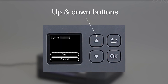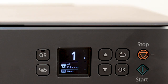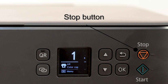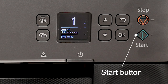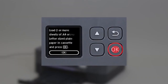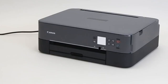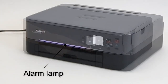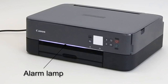Up and down buttons — ginagamit upang mamili ng setting item, pwede din gamitin for entering characters. Back button — pindutin lamang para bumalik ang LCD to the previous screen. Stop button — cancels operation when printing is in progress or kapag pumipili ng menu item. Start button — pindutin para makapagsimulang mag-print or mag-photocopy. OK button — para ma-finalize ang selection of items at ginagamit din to resolve errors. On button — pindutin para ma-on or off ang printer. Alarm lamp — ito ay nagla-light or nagfa-flash kapag mayroong error.